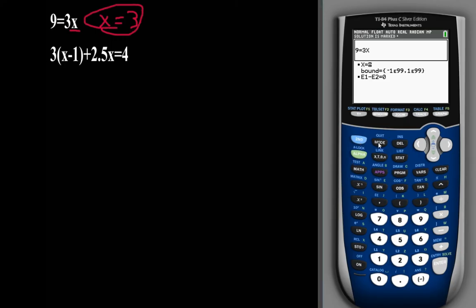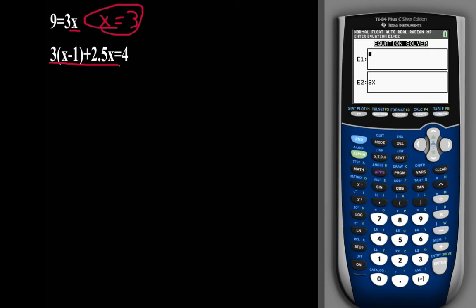So we'll press second, and then mode, which just means quit. And then we'll scroll all the way to the bottom again. Solver. And then let's just clear out this box. So the first side of the equation is 3 times x minus 1 plus 2.5x.